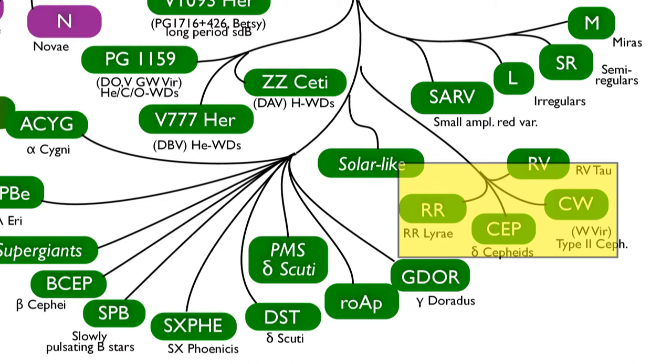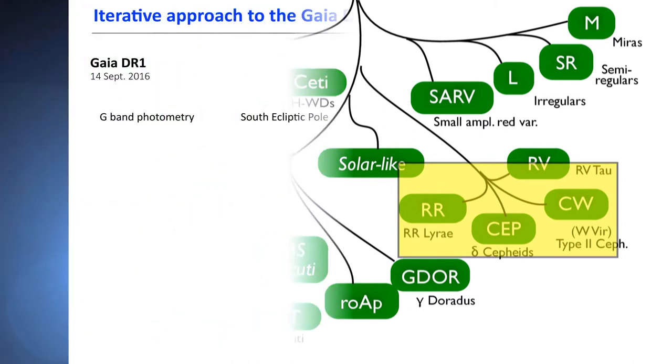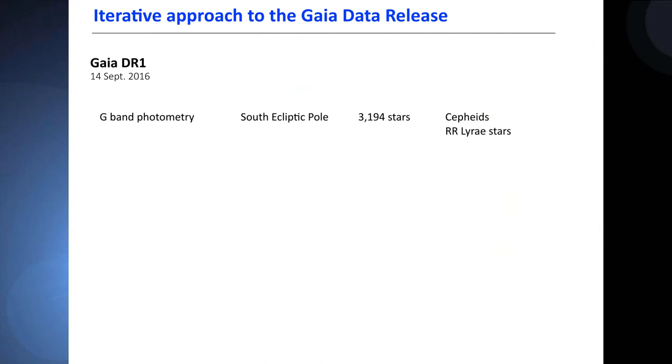For the DR2, we are using not only the G-band photometry, but also the BP and RP integrated photometry. We are also using a preliminary version of the astrometry, and we go to the entire sky with more than half a million stars.